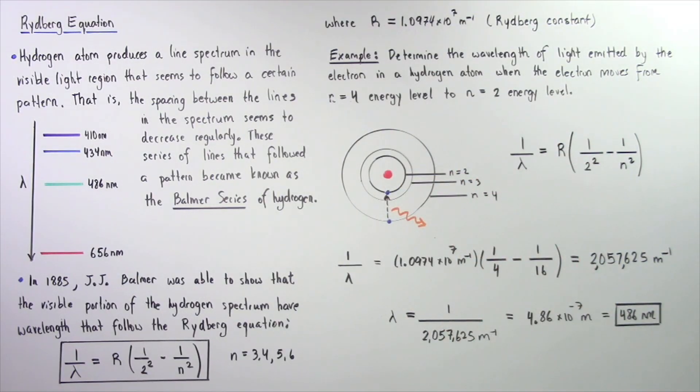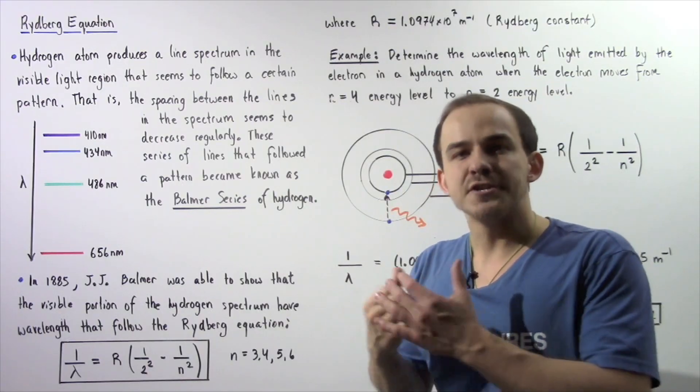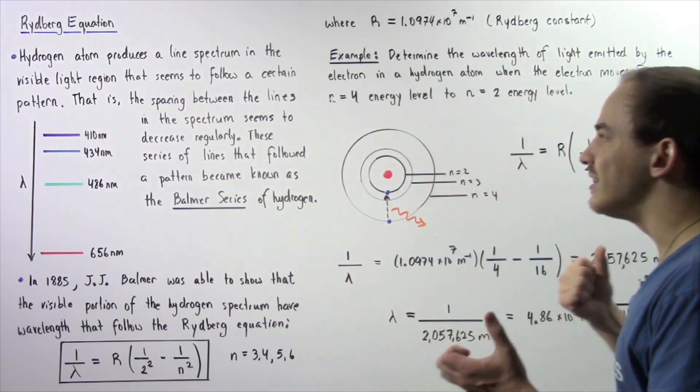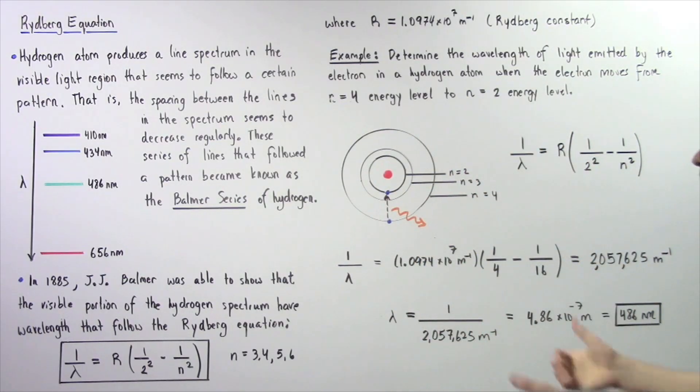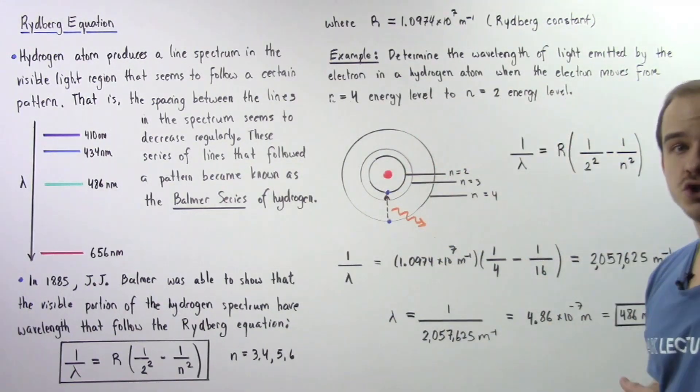So once again, what this equation basically tells us is it gives us our wavelength of light that is produced when our electron basically jumps from a higher level to a lower level back to n equals 2.